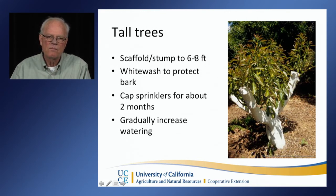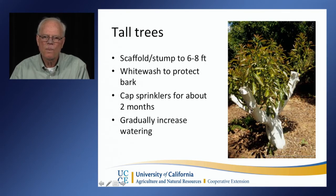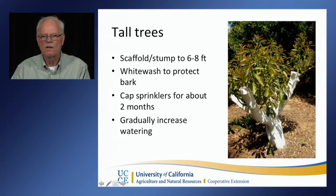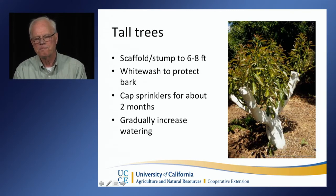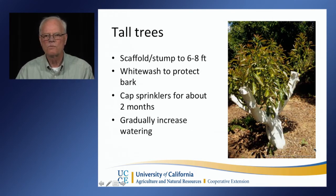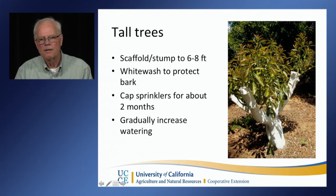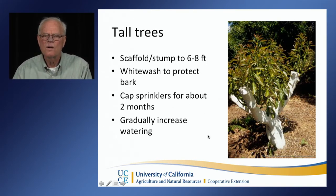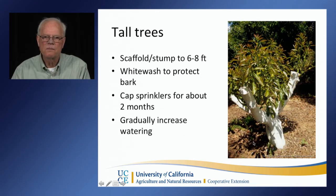Tall trees: we can stump these or scaffold them down to 6 to 8 feet and then whitewash to protect the bark and prevent sunburn. You can basically save about two months of irrigation — you cap it off, and the very large root system can access water for a smaller leaf volume. After a couple to three months, you can start gradually increasing the water. So you can achieve significant water savings by scaffolding or stumping.